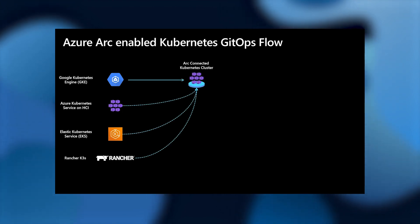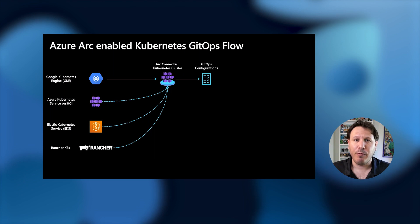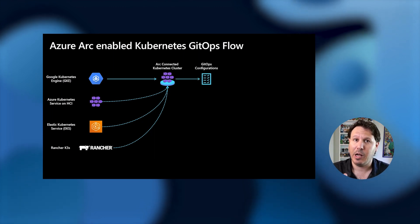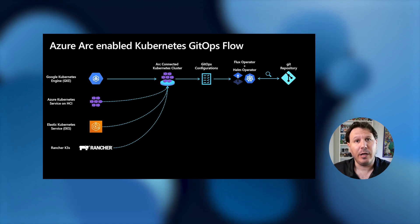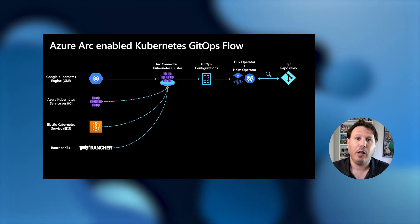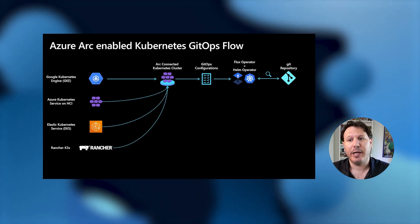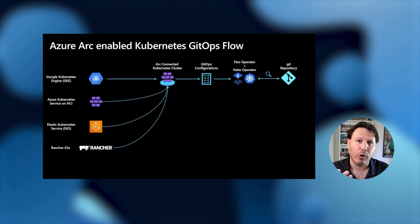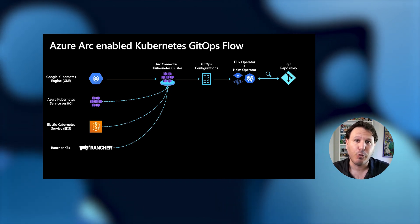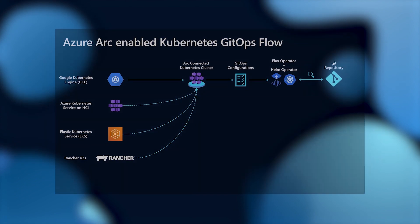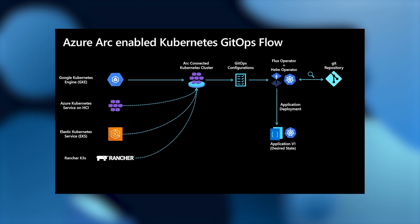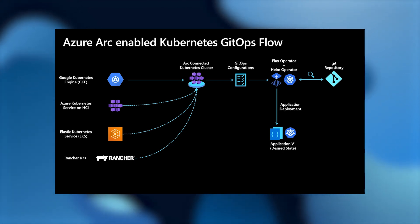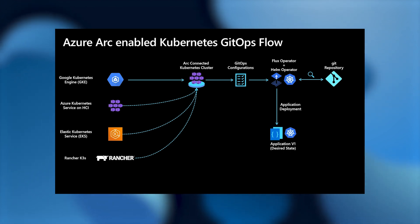Those clusters are already connected to Azure Arc and are now represented as first-class citizens inside Azure. We're going to apply GitOps configuration — two configurations: one on the cluster level and another one on the namespace level. The GitOps configurations are responsible for deploying the Flux operator and, in our case, also the Helm operator. The Flux operator and the Helm operator together will create a handshake with the Git repository, which is the source of truth for your application and configuration of the cluster. Once the Flux operator starts listening to the Git repository, it will go and deploy the application — we'll consider that version one.